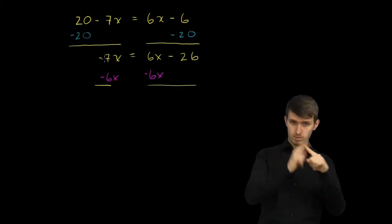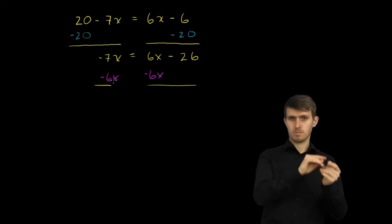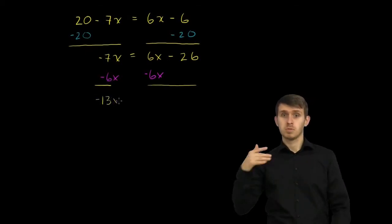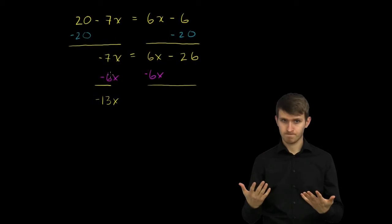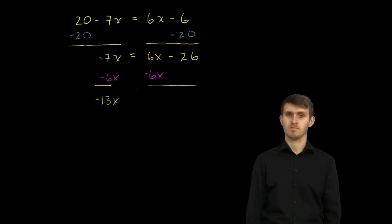The left-hand side, negative 7x minus 6x. That's negative 13x. It's negative 7 of something minus another 6 of that something is going to be negative 13 of that something.